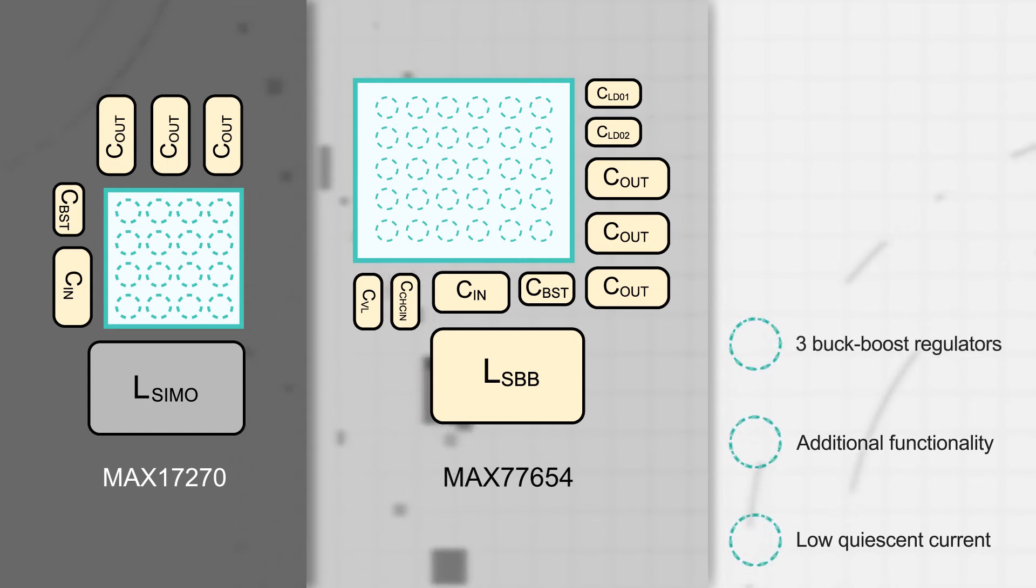Our SIMO PMICs offer three buck-boost regulators that allow them to operate over the full battery range. We also offer integrated battery charging, LDOs to power noise-sensitive devices, and GPIOs to implement functions such as dynamic voltage scaling and power sequencing outputs.